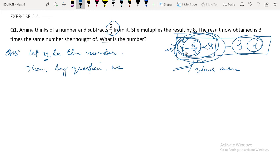By the question, we get 8 times (x minus 5 by 2) equals 3x. We need to solve this equation. Multiply 8 by x minus 5 by 2, which gives us 8x minus 20.